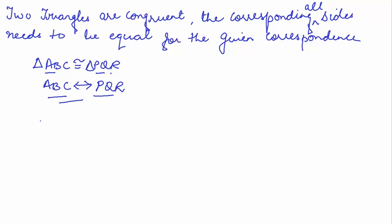So if it is for another correspondence, then this ABC is congruent to QRP should have been written like this, if it is for the correspondence of ABC being corresponding to QRP.